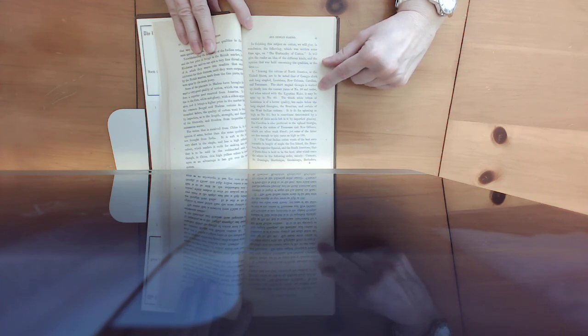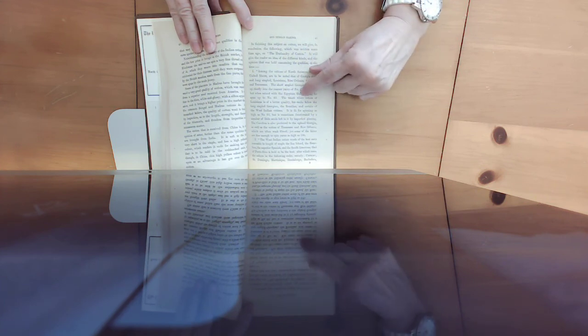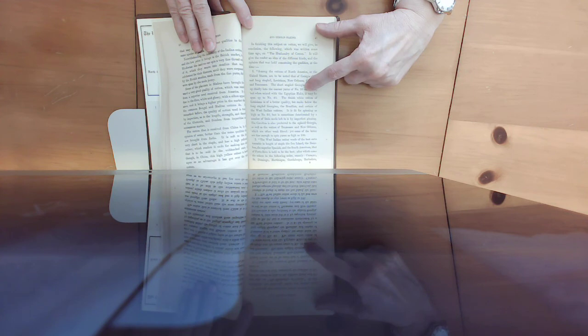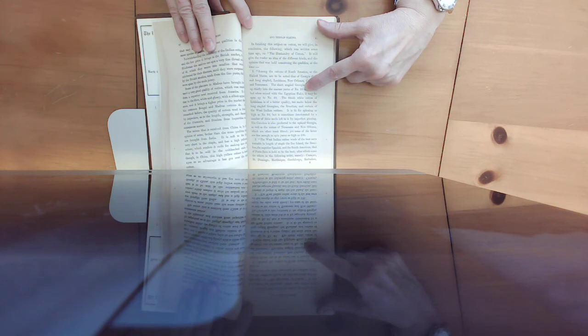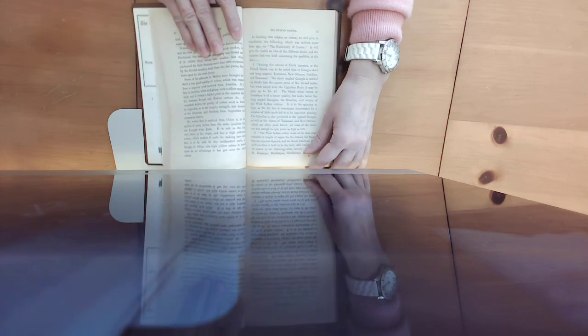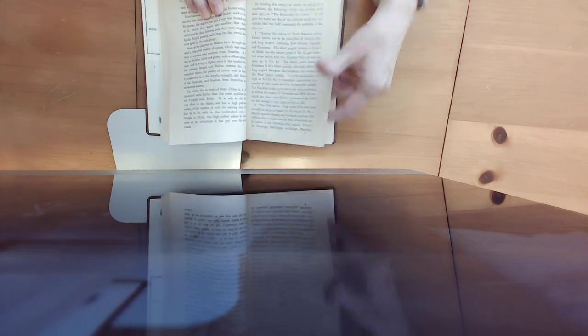The short staple Georgia cotton is worked up chiefly into coarser yarns of number 30, and if you have a question about Bradford count, that is the Bradford count - that means how many hanks you could get out of one pound. So 30 is kind of coarse. For reference, modern sewing thread is 60. The higher the number, the finer it is - that means you could get more skeins, the thread had to be thinner and thinner to get more skeins out of the same weight.